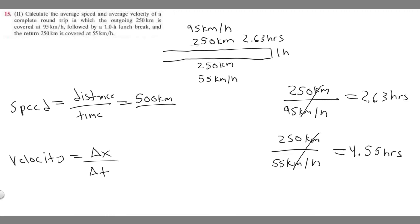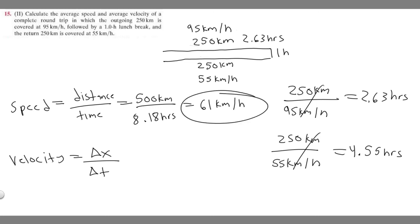Now we can find the total time. We spent 2.63 hours going out, took a one-hour lunch break, and it took 4.55 hours to return. Adding them all up: 2.63 plus 4.55 plus 1 equals 8.18 hours. For average speed, divide total distance by total time: 500 divided by 8.18 equals approximately 61 kilometers per hour. That is your average speed.